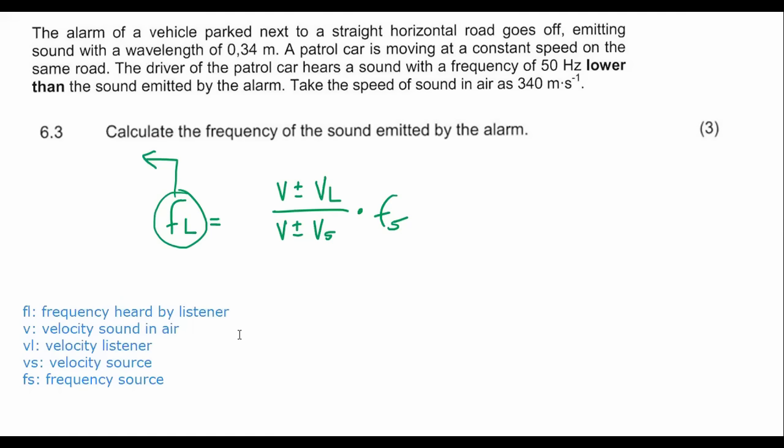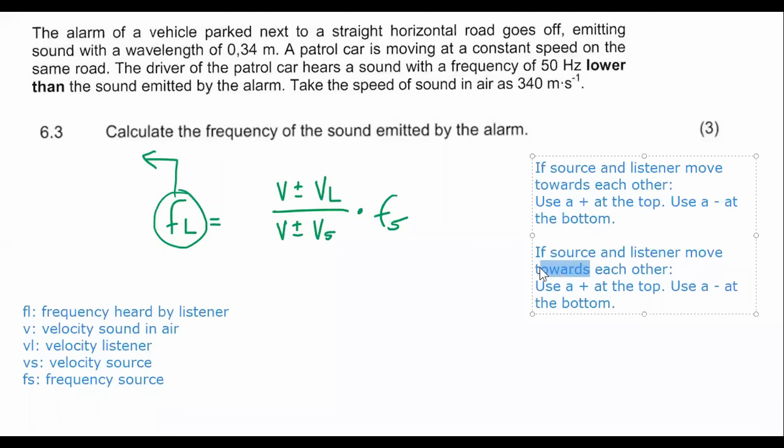Then there are two main rules that we need to remember. If source and listener move towards each other, use a plus at the top, use a minus at the bottom. If they move away from each other, then the opposite: use a negative at the top and use a positive at the bottom.